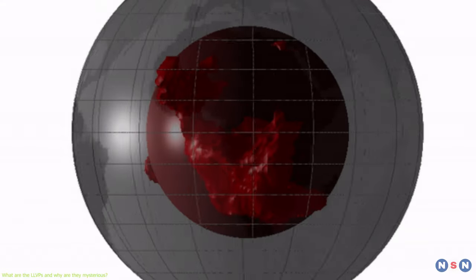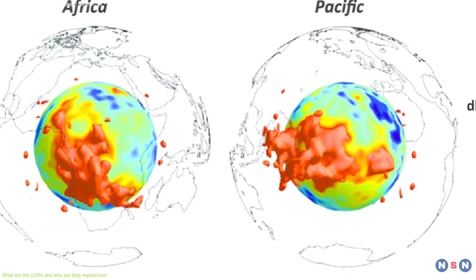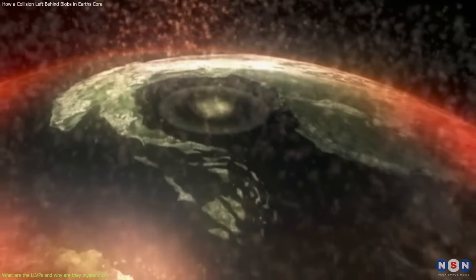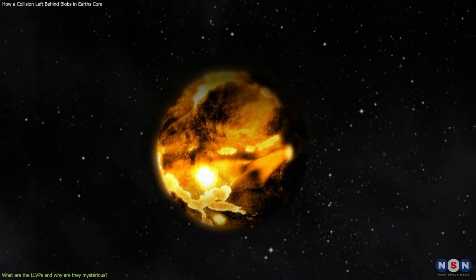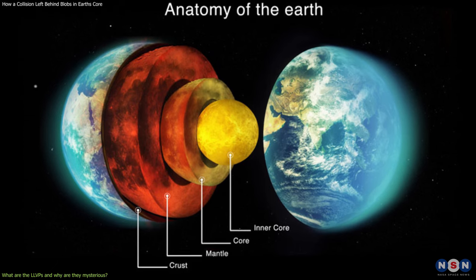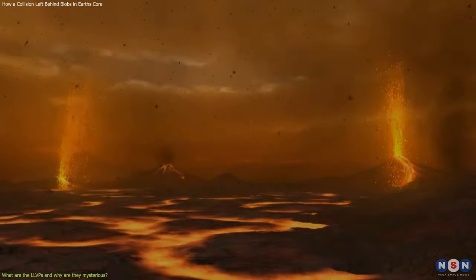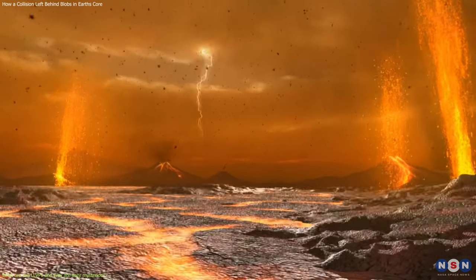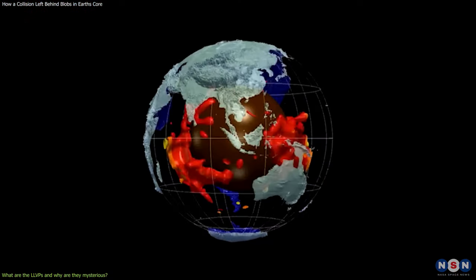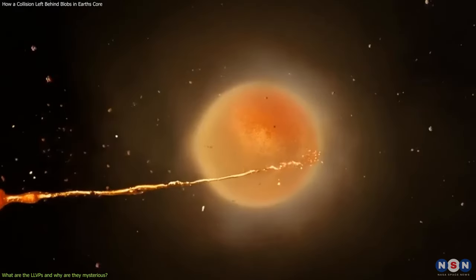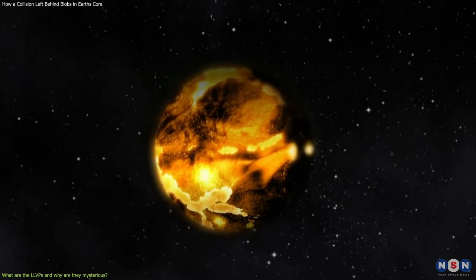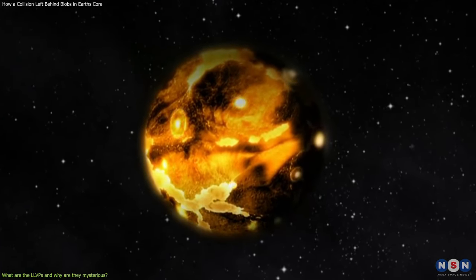Another theory is chemical differentiation. This theory suggests that the LLVPs are made of primordial material that was separated from the rest of the mantle during the early stages of the Earth's formation. The primordial material is the original material that the Earth was made of before it differentiated into layers of different density and composition. The theory proposes that the primordial material was denser and richer in iron than the rest of the mantle, and that it sank to the bottom and formed the LLVPs. However, this theory also has some problems, such as the timing and mechanism of the separation, and the thermal and chemical stability of the primordial material over billions of years.